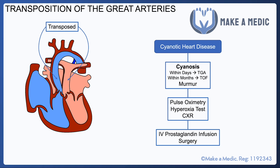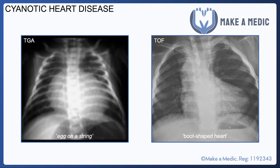The first thing to do if a neonate is suspected of having cyanotic heart disease, irrespective of the exact cause, is to start a prostaglandin infusion. This helps maintain the patency of the ductus arteriosus. You may recall that a pathologically patent ductus arteriosus can be closed with NSAIDs like indomethacin, which inhibits prostaglandin production — this is essentially the opposite. An IV prostaglandin infusion keeps the ductus arteriosus open, buying time while emergency surgery is planned.